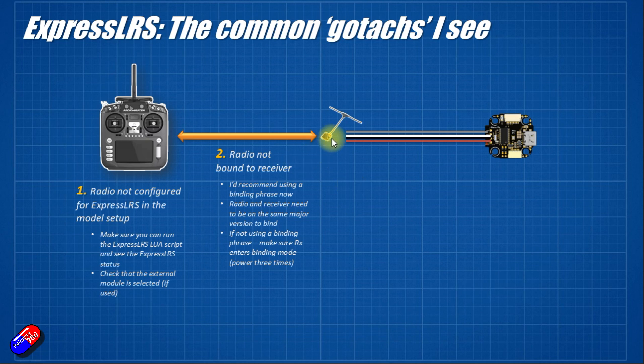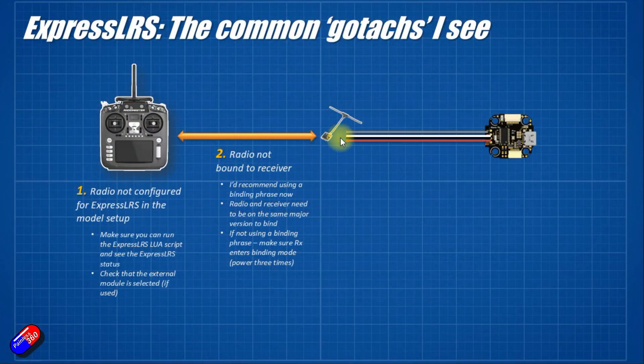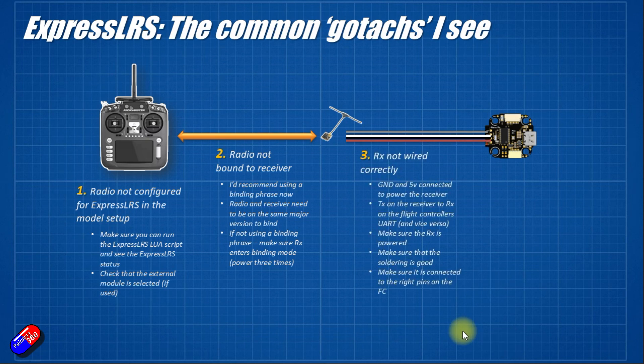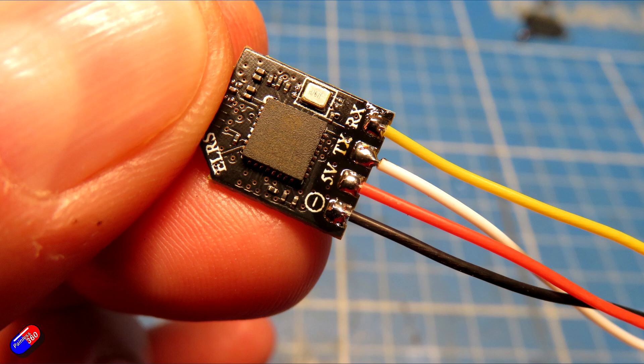The next one I do see occasionally issues with. Now the receiver, this is kind of one of the little RadioMaster RP1s, but it could be whatever you have. There are actually four wires that go from the receiver to the flight controller that are going to be talking that same CRSF protocol that we set up over here in the radio.